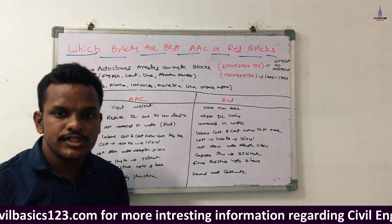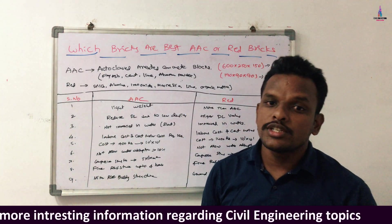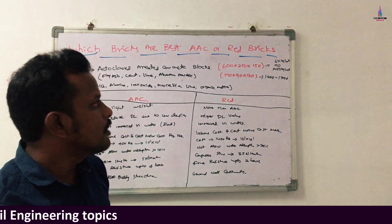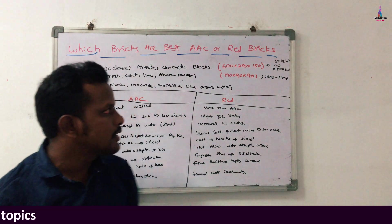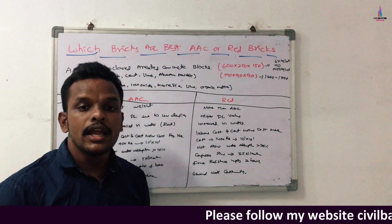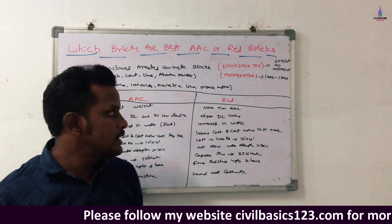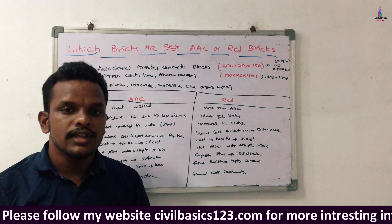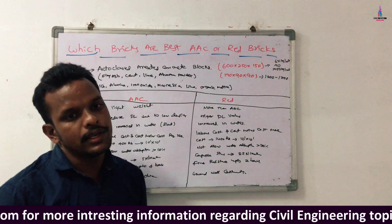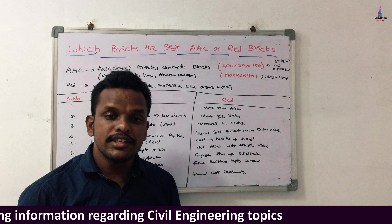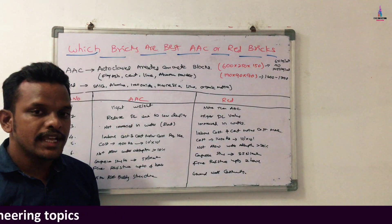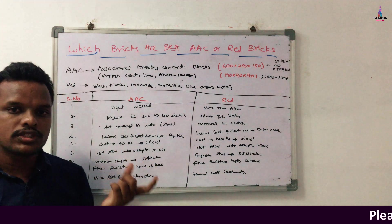The seventh comparison is compressive strength, which is an important factor. For one AAC block of 600 mm x 250 mm x 150 mm, the compressive strength is 5 N/mm². For a red brick block of 190 x 90 x 90 mm, the compressive strength is approximately 3.5 N/mm². The compressive strength of AAC blocks is also higher than that of red brick blocks, which is another main advantage.